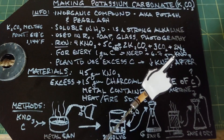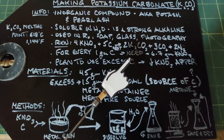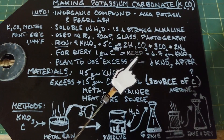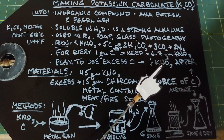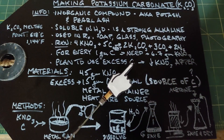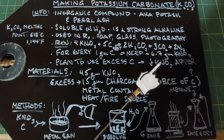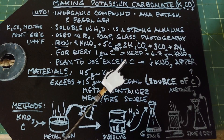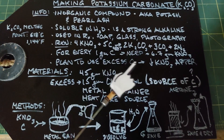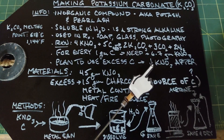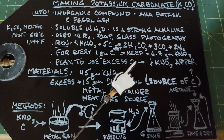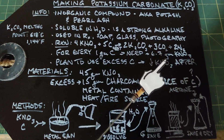However, there is a small problem with using excess carbon. The heat used to produce potassium carbonate comes from burning the mixture, because potassium nitrate is an oxidizer. With excess carbon, the mixture doesn't burn as well, so you have to fire it thoroughly with a blowtorch to make sure all the potassium nitrate is burned — otherwise the reaction won't fully proceed.